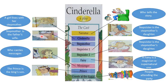This stepmother has two daughters. We call them stepsisters — stepsister one and stepsister two. So a stepsister is the stepmother's daughter. The stepmother has two daughters; we call them stepsisters.